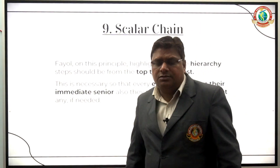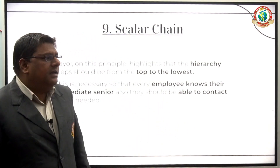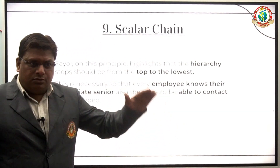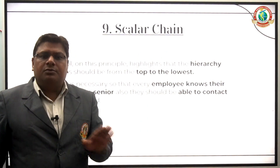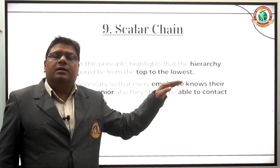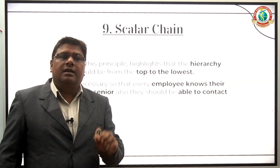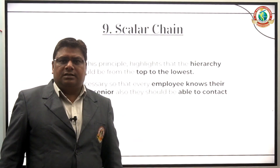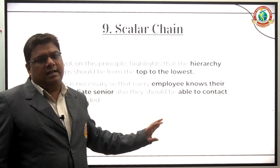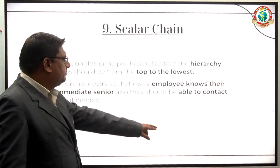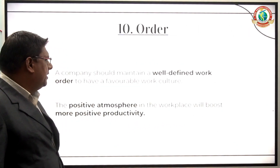The ninth principle is Scalar Chain. Scalar Chain ek aisa format hota hai jo kisi bhi organization mein decide kiya jata hai, jisme information transfer ka flow up to down hota hai — yani jo top level of management hote hain, woh neeche ki or information share karte hain. Kabhi zaroorat padne par direct information share karna hota hai, jise hum Gang Plank kehte hain. The tenth principle is Order — aadesh dena aur lena, jisse organization ka kaam aasaani se perform ho sake.